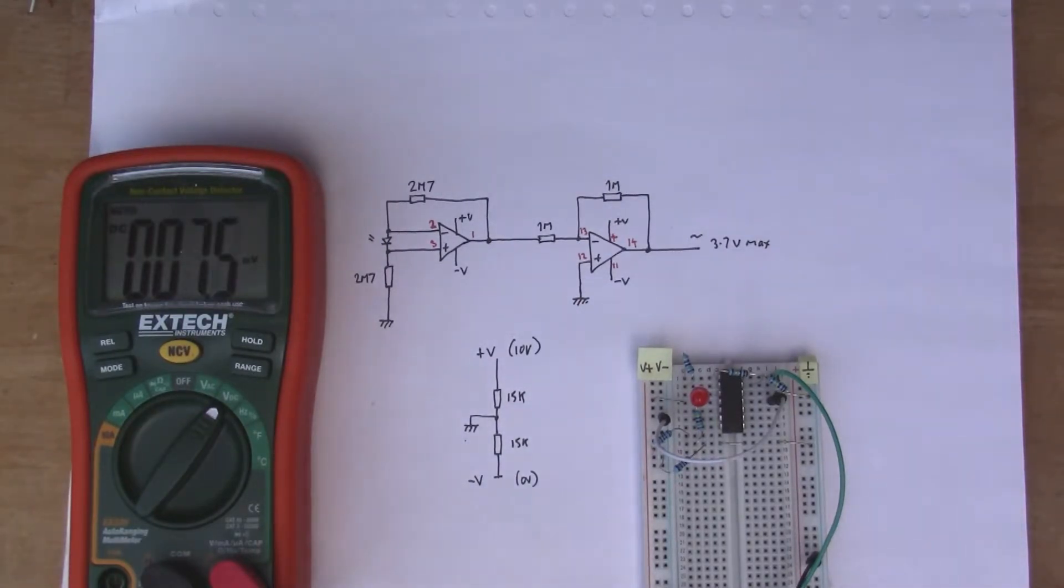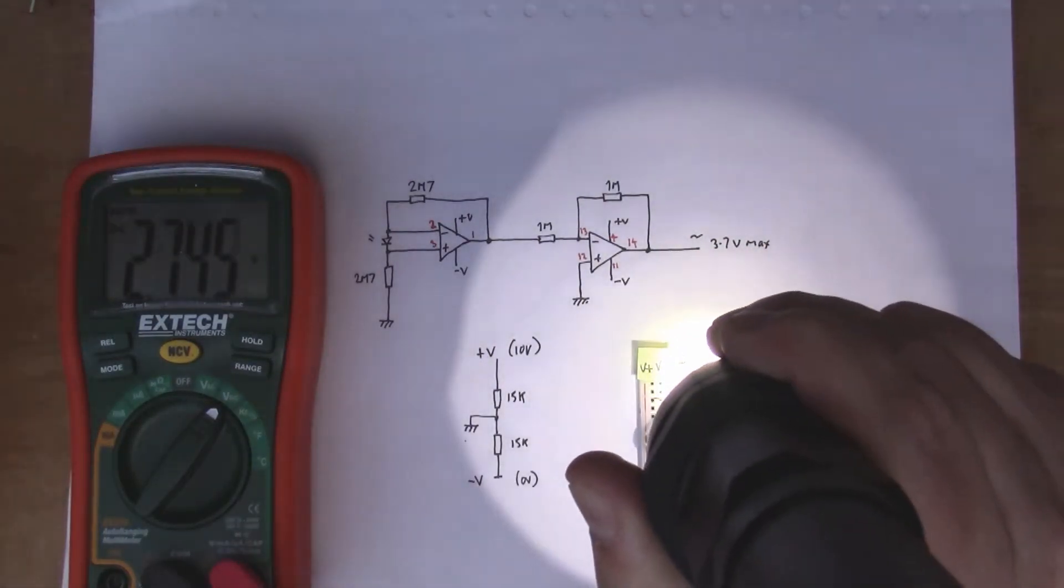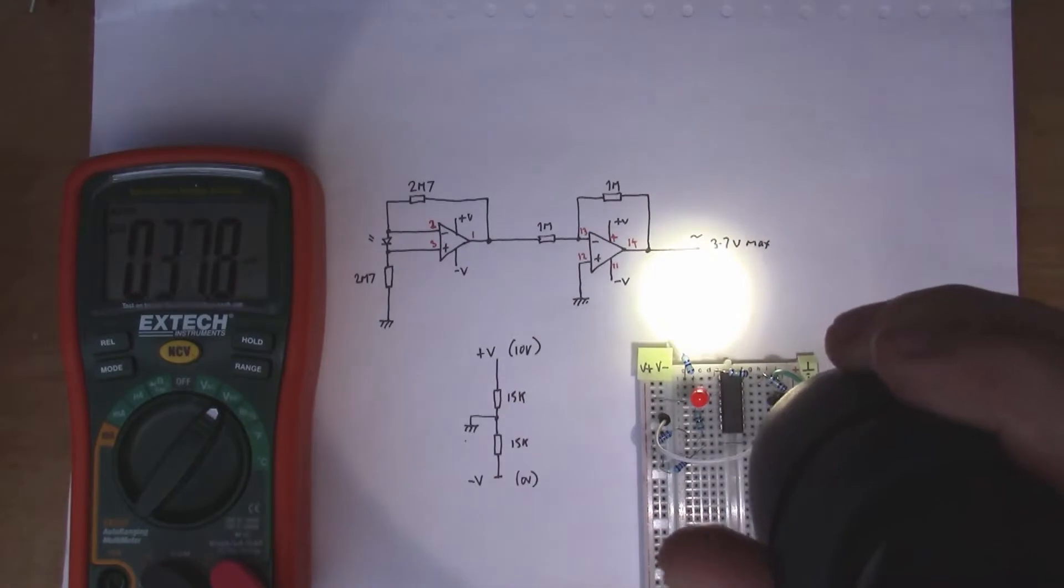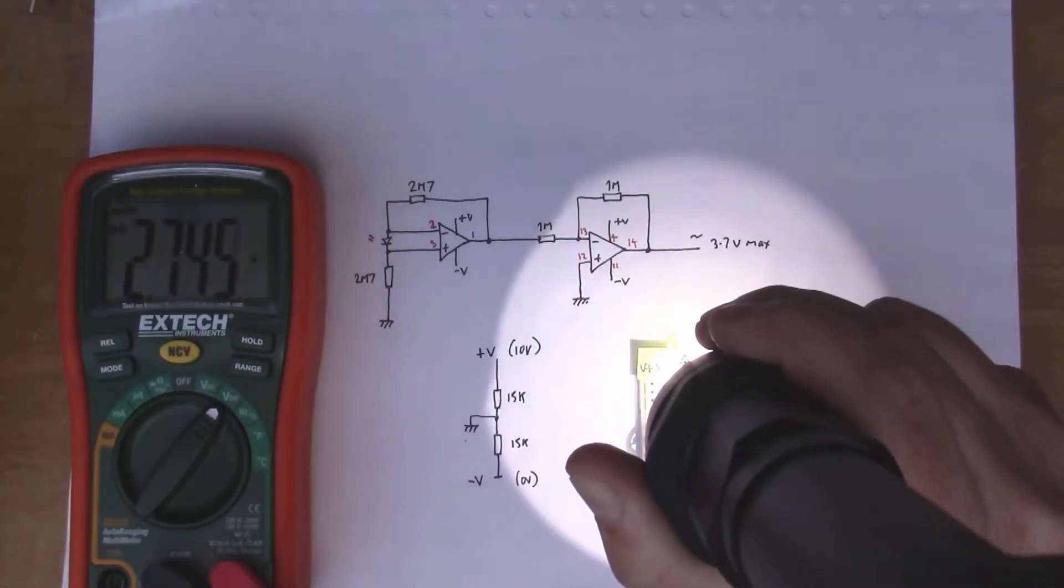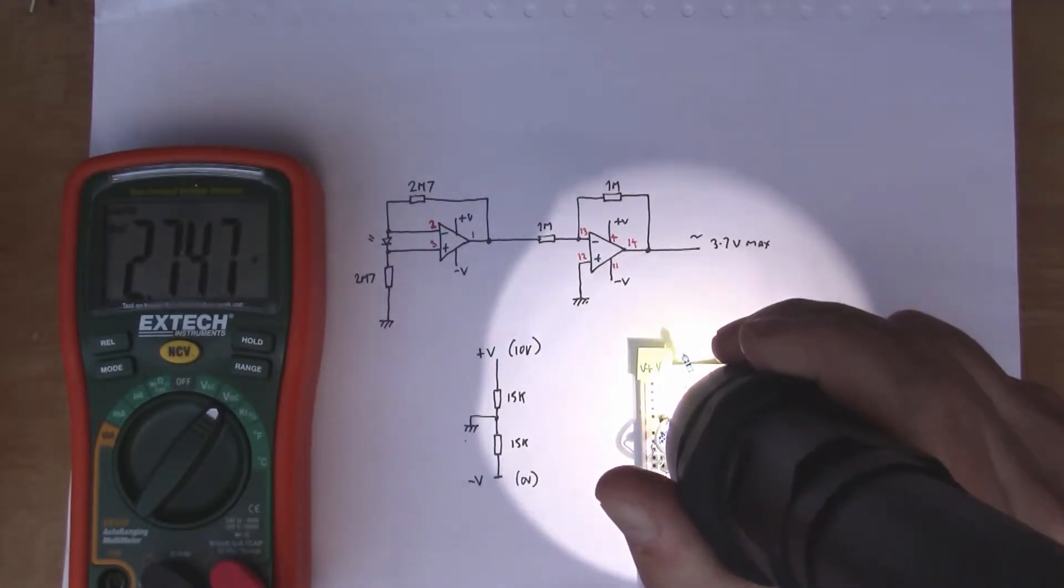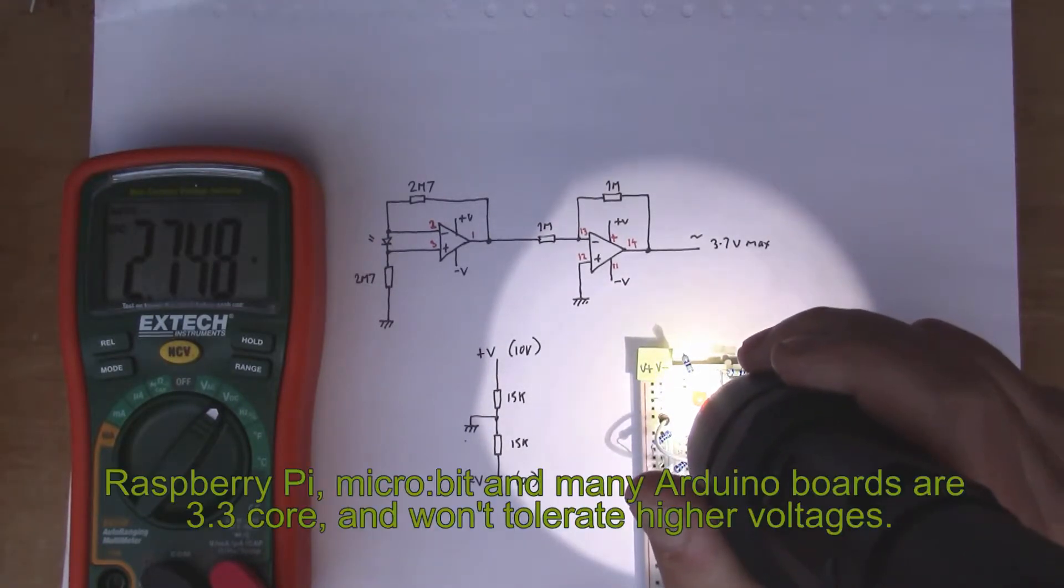If I get my torch here and I shine that on the LED, you can see that it goes right up to about 2.7 volts. 2.7 volts is a nice value because it's suitable for input to an A to D converter on a microcontroller, especially a three volt microcontroller. If you got a microcontroller that runs on three volts, you typically don't want to put more than three volts into the analog input.